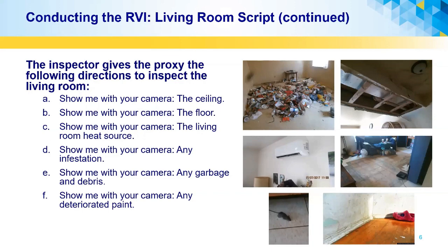Continuing the living room inspection directions: show me with your camera the ceiling; show me with your camera the floor; show me with your camera the living room heat source, such as a radiator or heat register; show me with your camera any infestation, such as cockroaches; show me with your camera any garbage and debris; and show me with your camera any deteriorated paint. Regarding garbage and debris, HUD requires that if someone cannot pick up the garbage and debris within one to two hours, it is considered a defect.